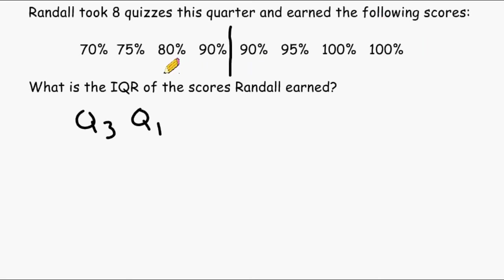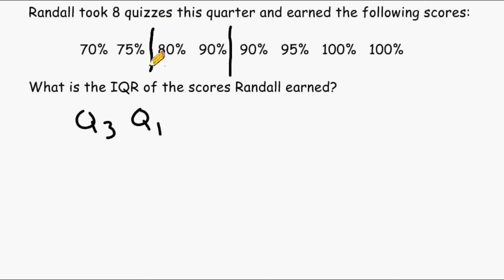To the left of the median we have four numbers, and there is no single middle number we can just circle and call Q1. When that happens, divide that data in half and figure out what would be in the middle of those two numbers.